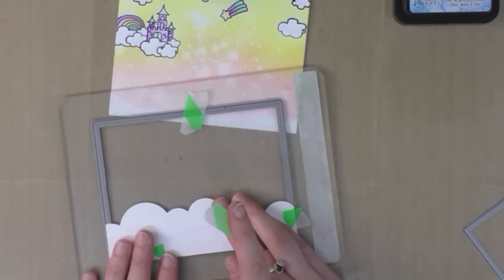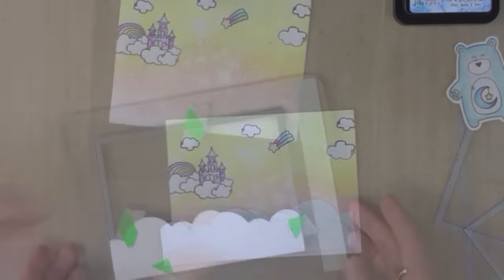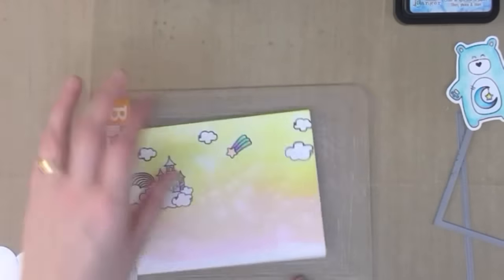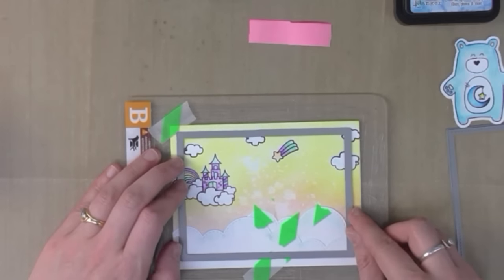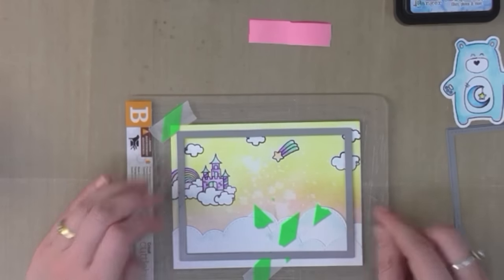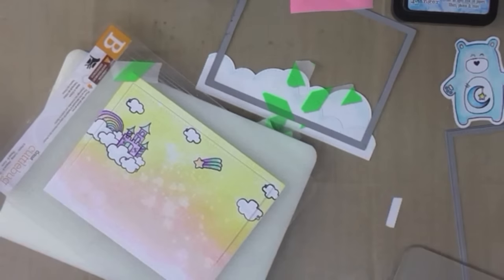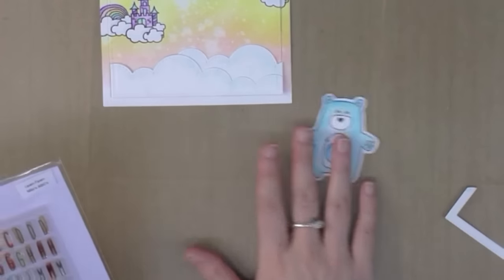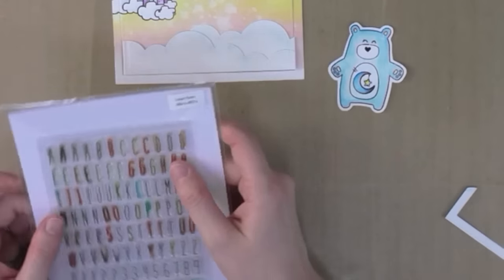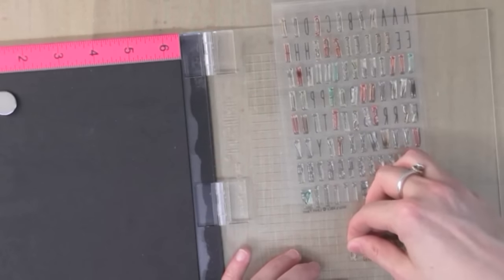I ran that through the Cuttlebug using the Lawn Fawn Large Stitched Rectangles die and it was at this point that I decided I wanted to make it into a shaker card. So I used the largest die from the Lawn Fawn Small Stitched Rectangles die to cut out a frame in my project, and I did it in both the clouds and the background as well. I'm going to create a greeting for my card that says Happy Care Bearer's Day.